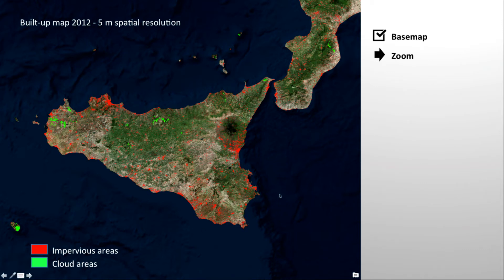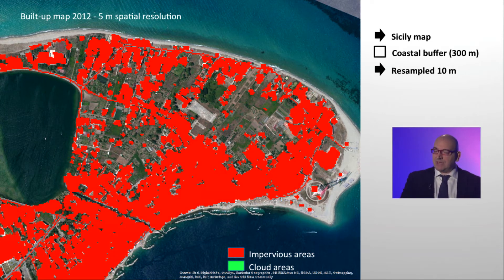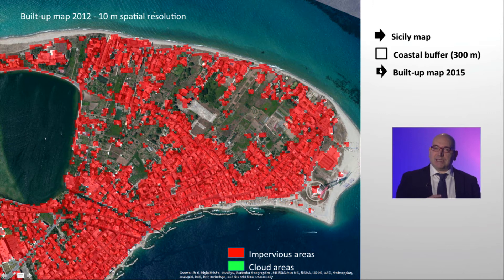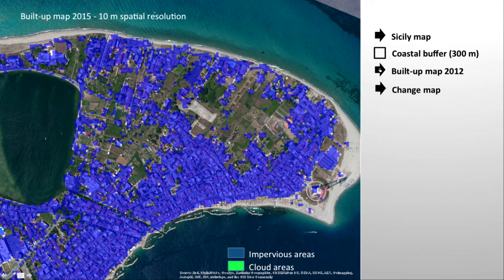Let's see another example of changes in urban areas near the coastline. This is the built-up map of Sicily, Italy, of 2012 at 5 meters. Clicking on zoom, we can see the details on the northeast part of the island on the 2012 very high resolution imperviousness map. In order to compare this map with the one related to 2015, we have to resample the 2012 map, bringing it to 10 meters spatial resolution. We are interested in the areas close to the coastline. To see these areas, we can activate the coastal buffer layer. The greatest part of the city is concentrated within 300 meters from the coastline. Clicking now on the built-up map 2015, we can see the very high resolution imperviousness layer for the year 2015.